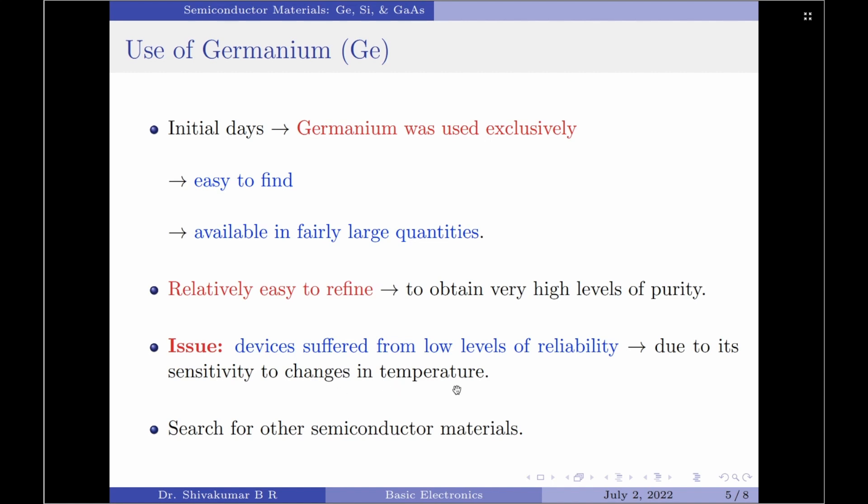That is, the characteristics of the devices fabricated using germanium varied significantly with variation in temperature. This is considered a negative trait in the field of electronics. Therefore, scientists started to investigate for other semiconductor materials which produced stable characteristics under varying temperatures.